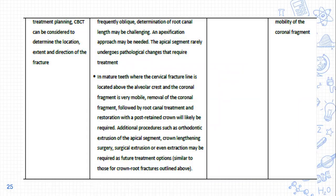Working length determination for the radicular portion can be challenging due to the oblique fracture line. An apexification approach may be needed. In mature teeth where the cervical fracture line is located above the alveolar crest and the coronal fragment is very mobile, removal of the coronal fragment is indicated, followed by root canal treatment and restoration with a post-retained crown. Additional procedures such as orthodontic extrusion, crown lengthening surgery, or extraction may be required as future treatment options.